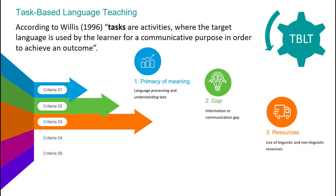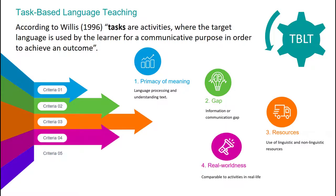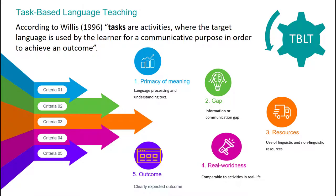To perform the task, learners need to use their linguistic knowledge, like vocabulary and sentence structure, but also non-linguistic resources, like their reasoning skills, numerical knowledge, and analytic ability. The fourth criterion is that the task should be comparable to activities learners engage with in real life — for instance, calculating and applying for a mortgage, or finding the cost of a rental car over time, collecting and analyzing data, and so on. The last criterion is that the outcome, other than the use of language, is clearly expected — for instance, producing a graph using Excel.